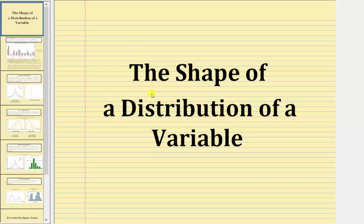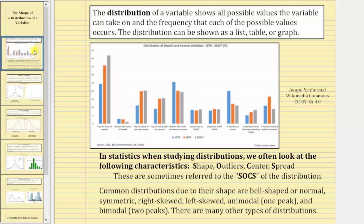Welcome to a lesson on the shape of a distribution of a variable. The distribution of a variable shows all possible values the variable can take on and the frequency that each of the possible values occurs. The distribution can be shown as a list, table, or a graph.